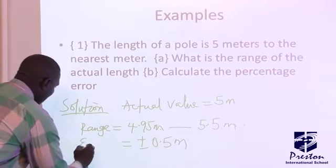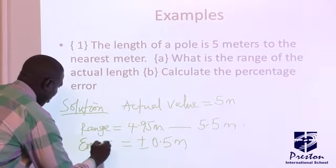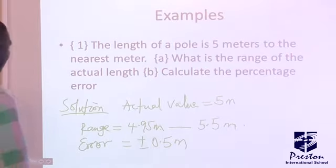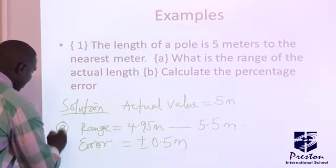So, your error now, your error is plus or minus 0.5 meters. So that is for part A.